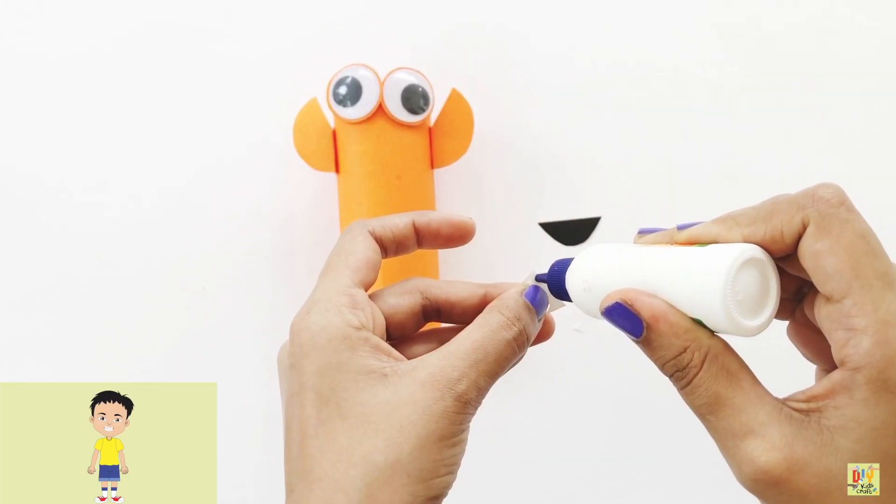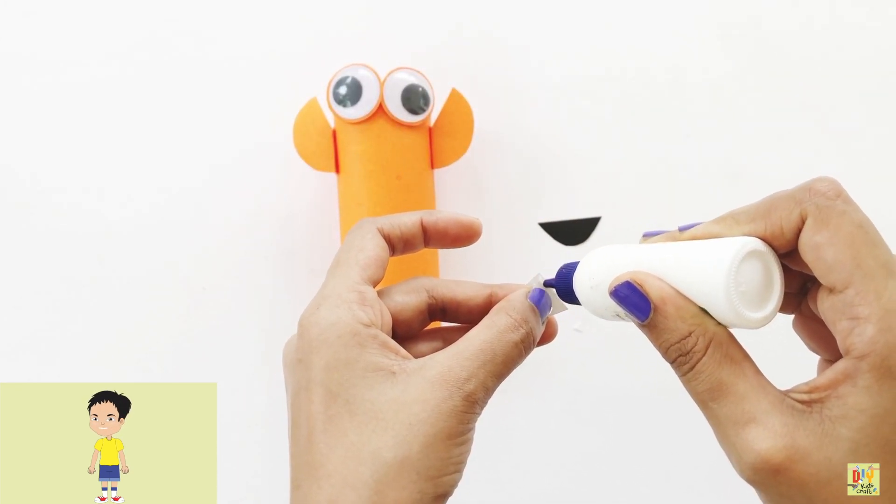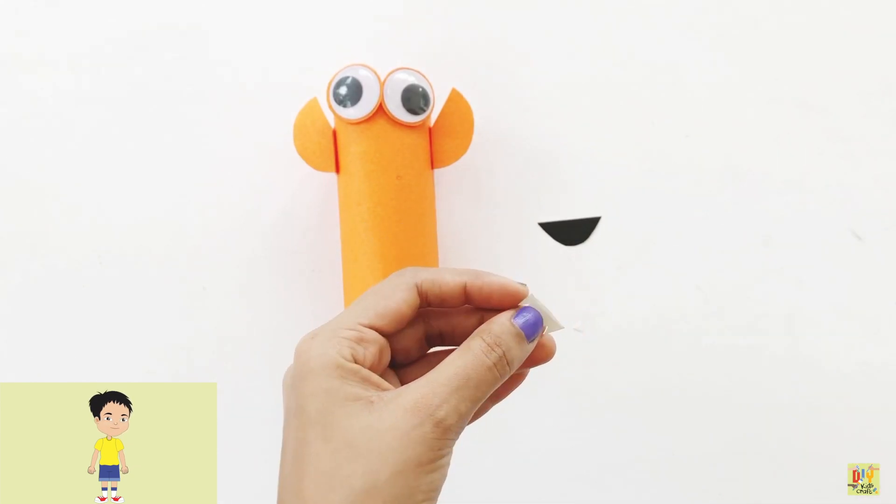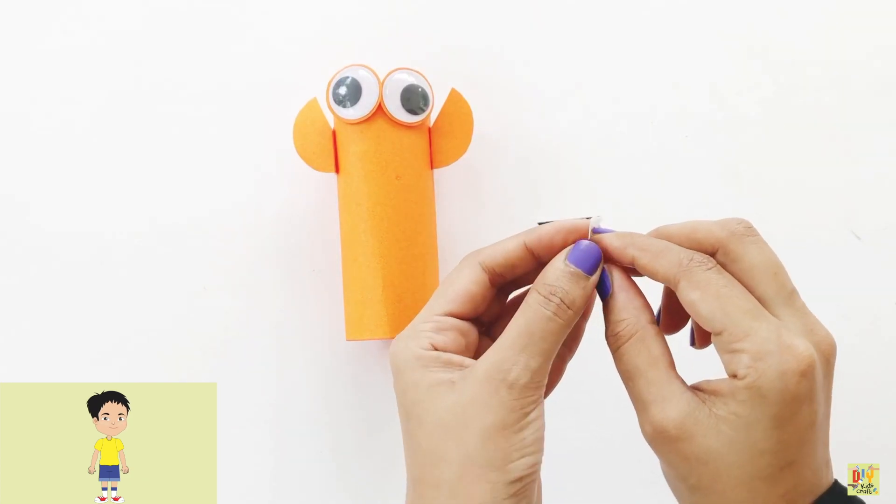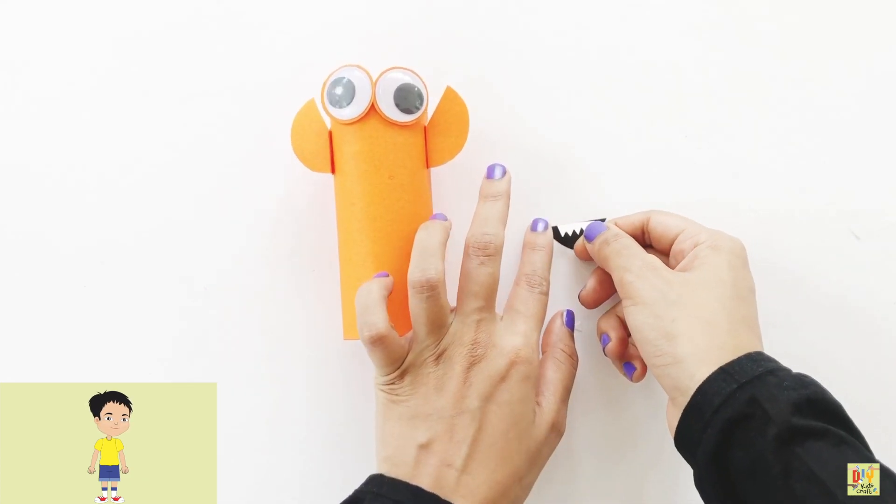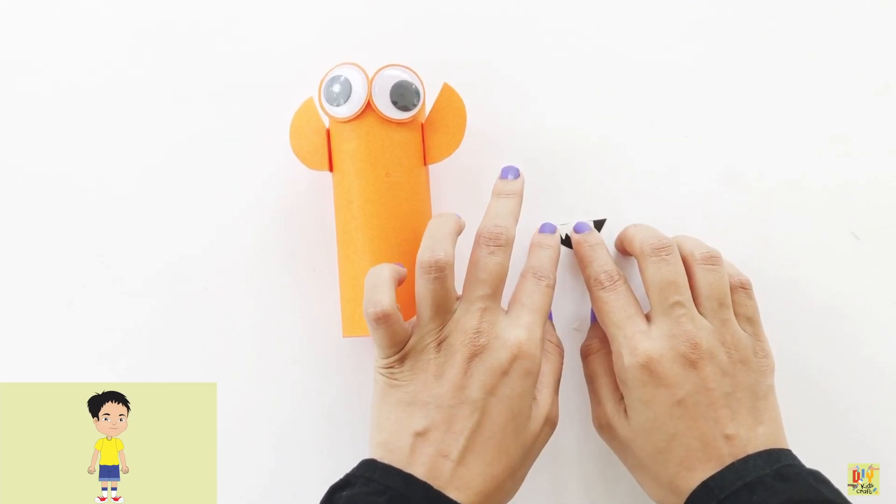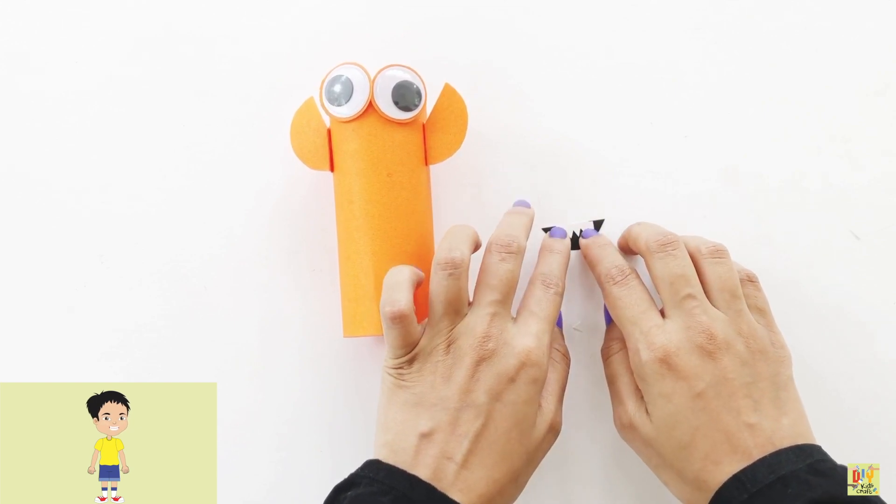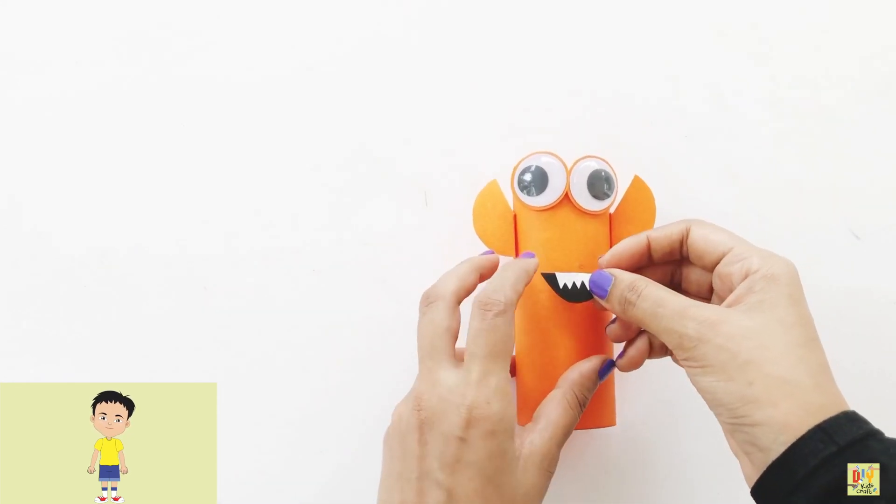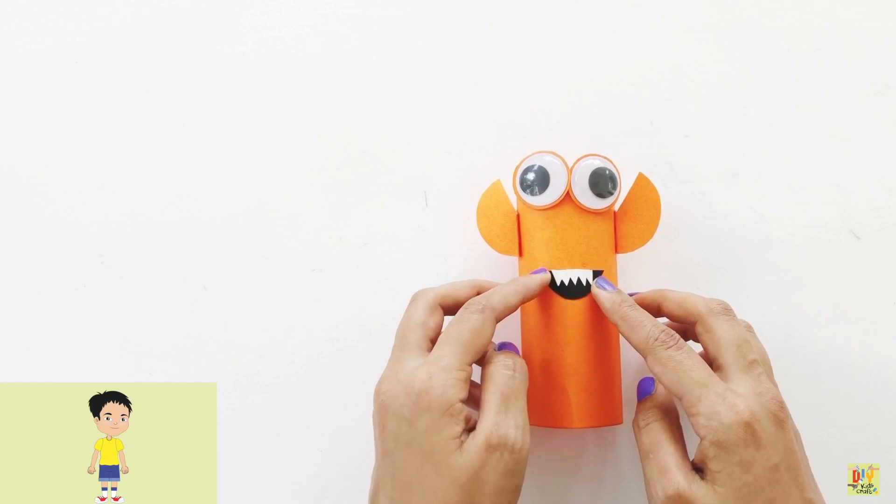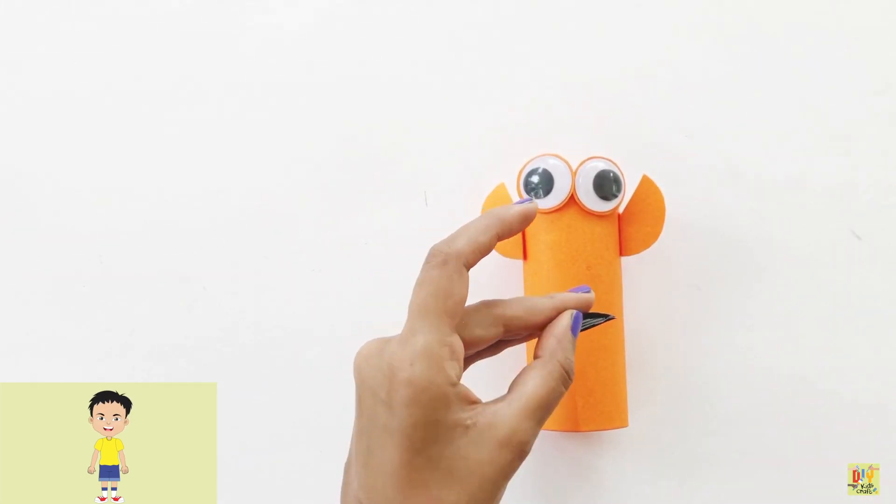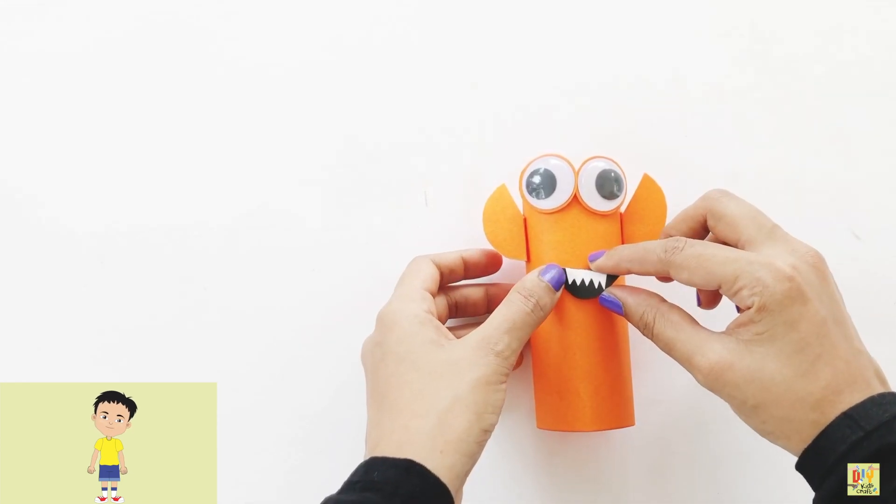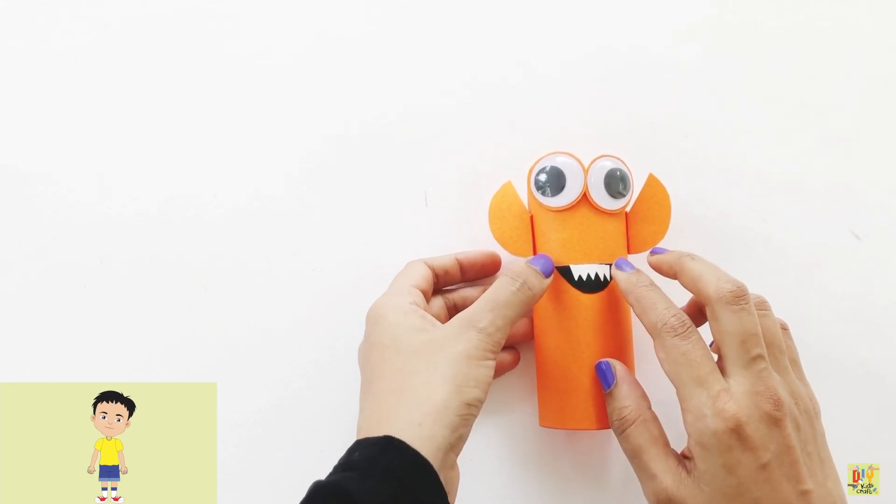Apply glue to the other paper. Now we can place the mouth. Apply glue again and place it on our monster.